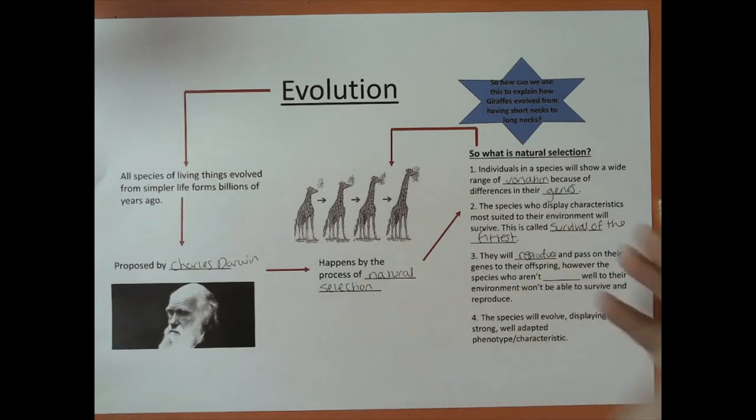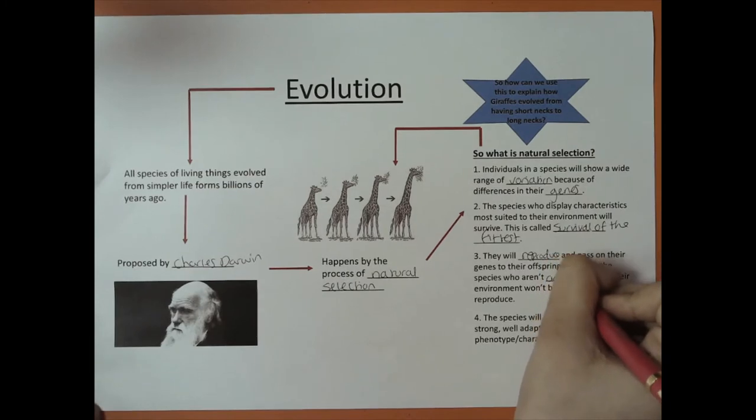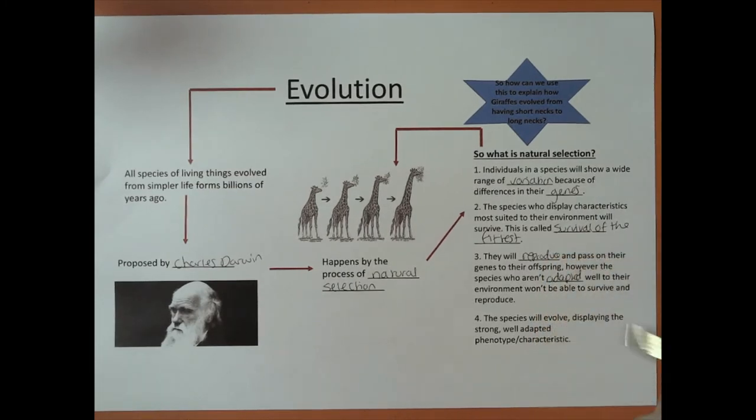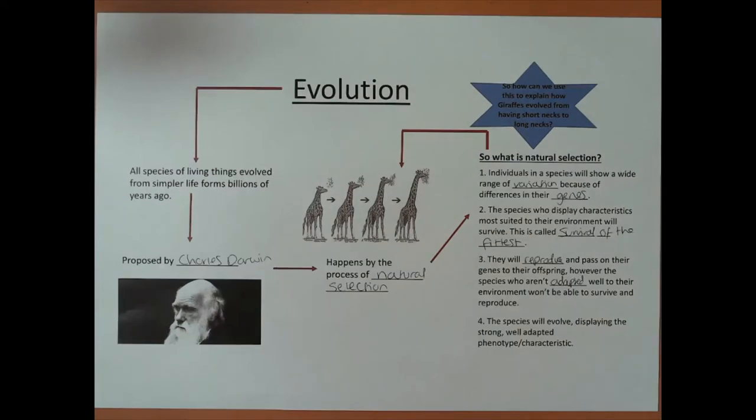However, the species who aren't adapted well to the environment won't be able to survive and reproduce. The species will evolve displaying the strong, well-adapted phenotype or characteristic.